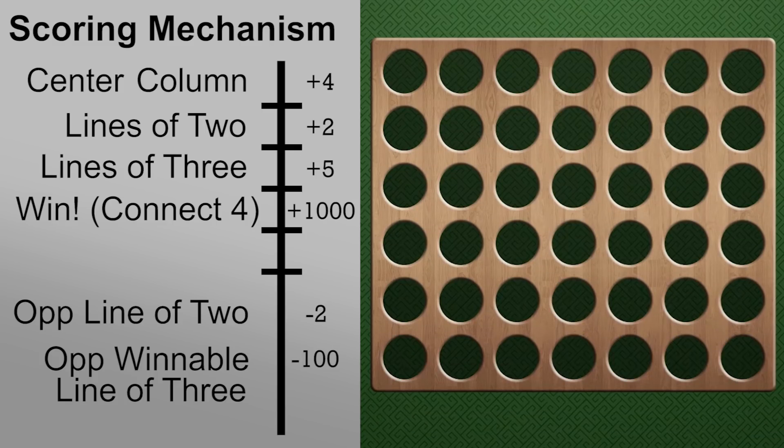So to begin, at the start of the game, the only column that gives you points is a center column, which is a plus four, and all these other columns would be a value of zero. So our AI would see that this is the greatest value and decide to drop its first piece right there in the center.